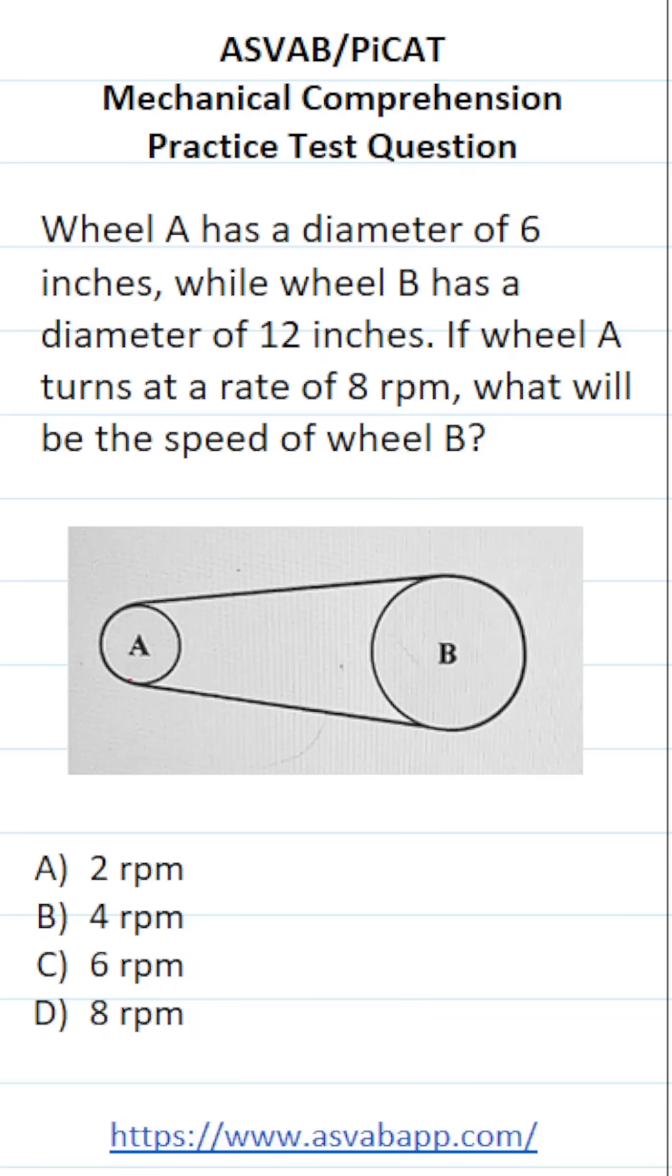This mechanical comprehension practice test question for the ASVAB and PiCAT says, Wheel A has a diameter of 6 inches, while Wheel B has a diameter of 12 inches. If Wheel A turns at a rate of 8 RPM, what will be the speed of Wheel B?